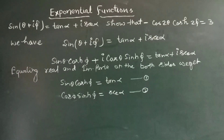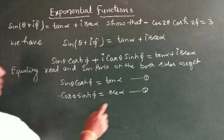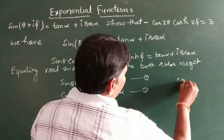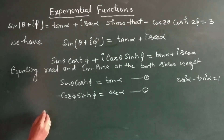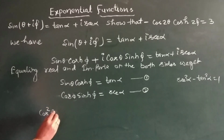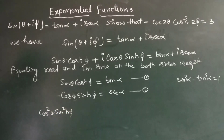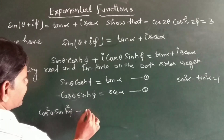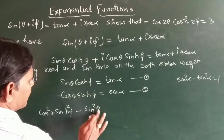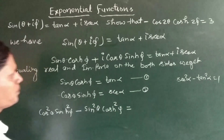We may write sec²α − tan²α = 1. Then substituting, we get cos²θ·sinh²φ − sin²θ·cosh²φ = 1.